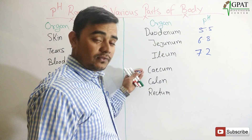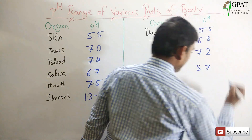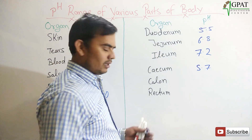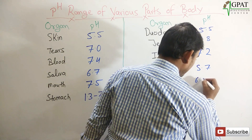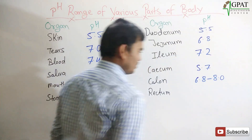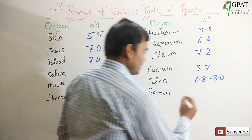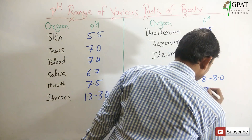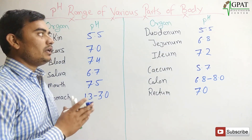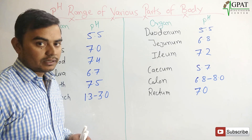The pH of the cecum is 5.7. The pH of the colon varies from 6.8 to 8.0. And lastly, the pH of the rectum is 7.0. So this is the pH range of different parts of our body, and these pH ranges are very important. Thank you.